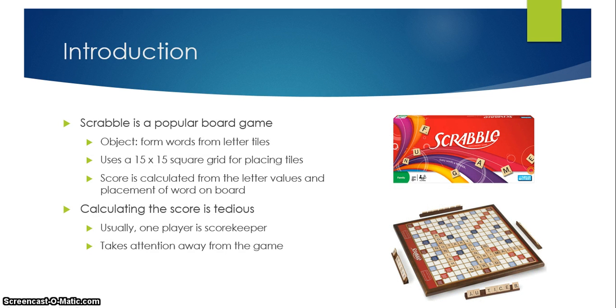So the introduction: Scrabble is a very popular game. I've been playing it since I was in elementary school. It's a square grid of 15 by 15 grid spaces where you put letter tiles on it to form words. Each letter has a particular point value and particular spaces have special letter or word multipliers. So your score is calculated from the sum of your letter values and multiplied by any letter or score multipliers that your word is placed on top of on the board.